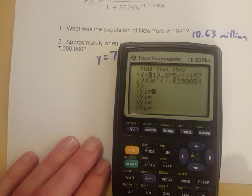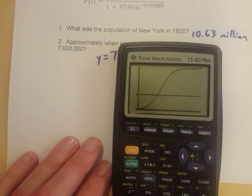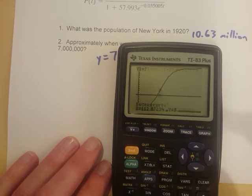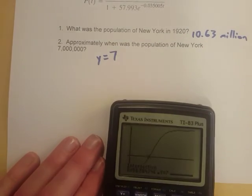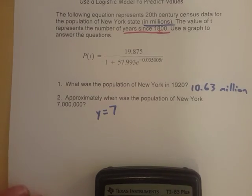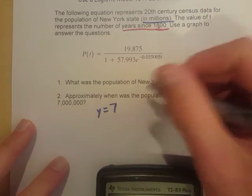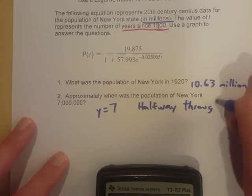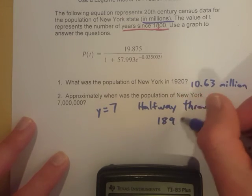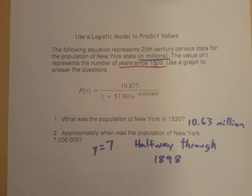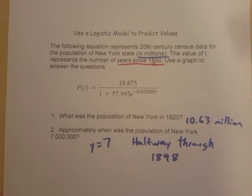So here's how I'll do that: go back to y-equals and enter seven for y2. That way when I graph it, I can find where the two curves intersect. Using second-trace intersect, selecting first curve, second curve — they intersect at x ≈ 98.58. So approximately, if we started in 1800 and add 98 years, that means it's going to be sometime in the year 1898. You don't need to be more specific than that — the book might express it in months, but just estimate it that way. That's the kind of problem you'll be doing in your homework.